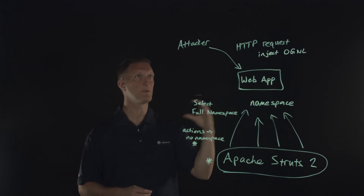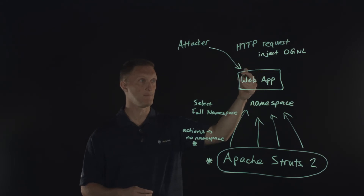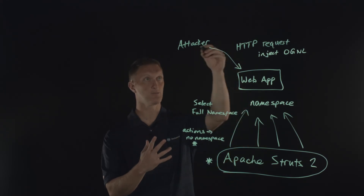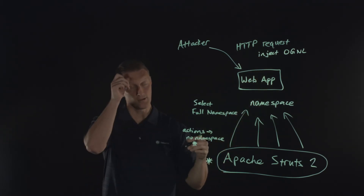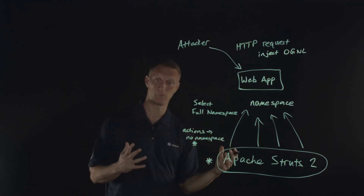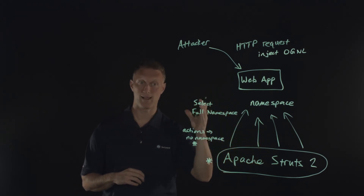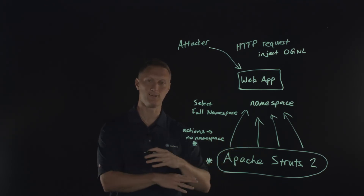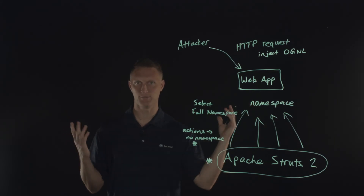You may ask yourself: what are some of the things the attacker could do? The attacker can actually take over the web server. This is a remote code execution problem because they can remotely execute code from these OGNL expressions on your web server. Our F5 Labs team has done some amazing work on this and they actually found one specific example of attackers using this very vulnerability to mine for cryptocurrency.